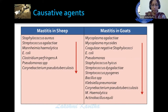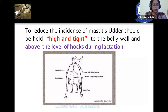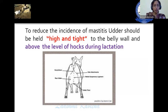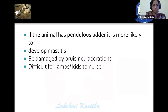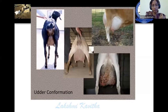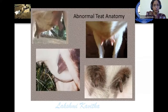In case of goats, mastitis is mainly caused by Mycoplasma agalactiae, Mycoplasma mycoides, and then Staphylococcus. There are also several other organisms responsible for this disease in goats. To reduce the incidence of mastitis, a good body condition score and a tight udder is very important. The udder should be above the level of the hock. If the animal has a pendulous udder, it is more likely to develop mastitis because of damage by bruising or lacerations, and lambs or kids find it difficult to nurse.